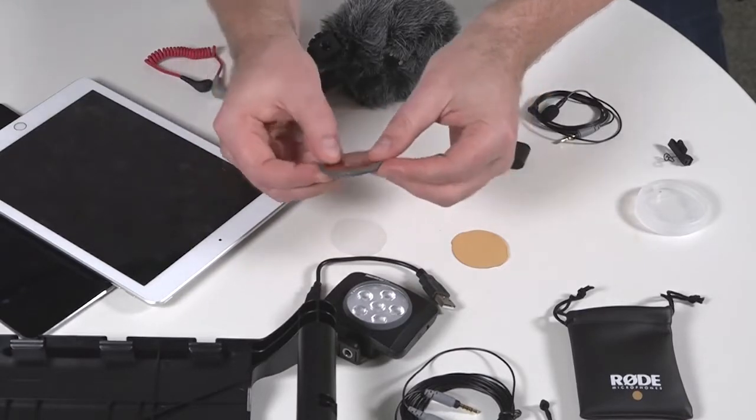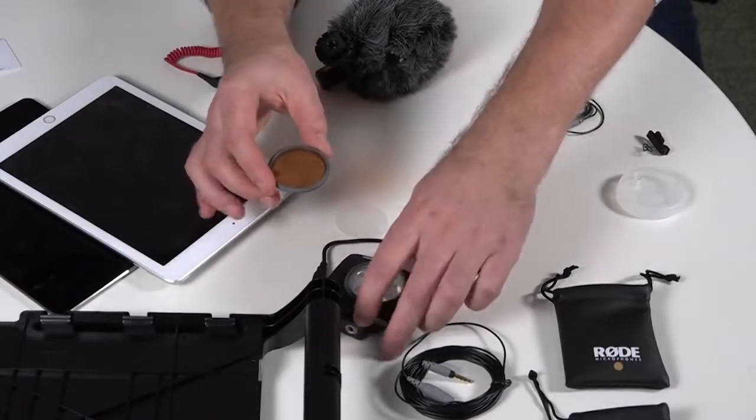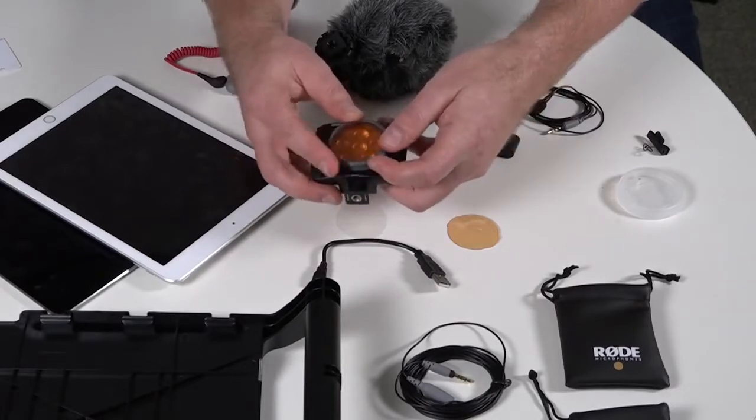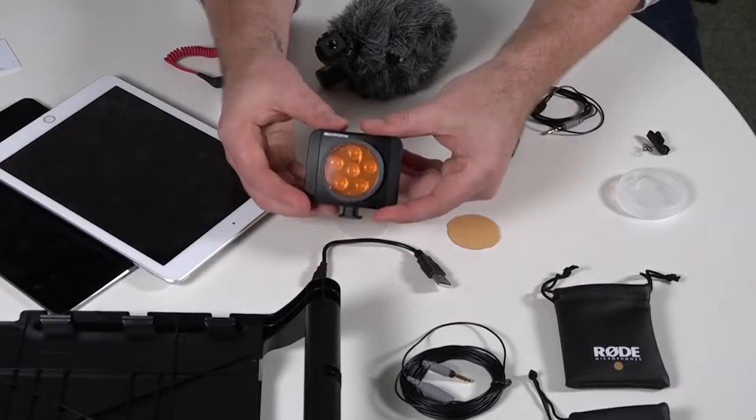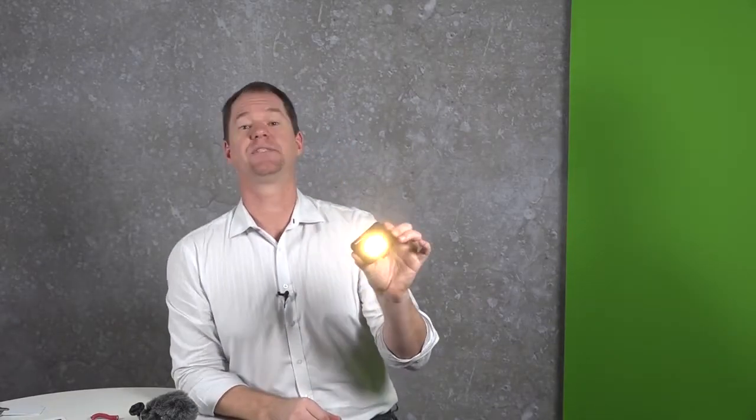Once you've got that on top, then you can simply click that, just press it onto the light, so that that's now got the orange diffuser in it. It'll cast a nice warm glow over the skin of the star.